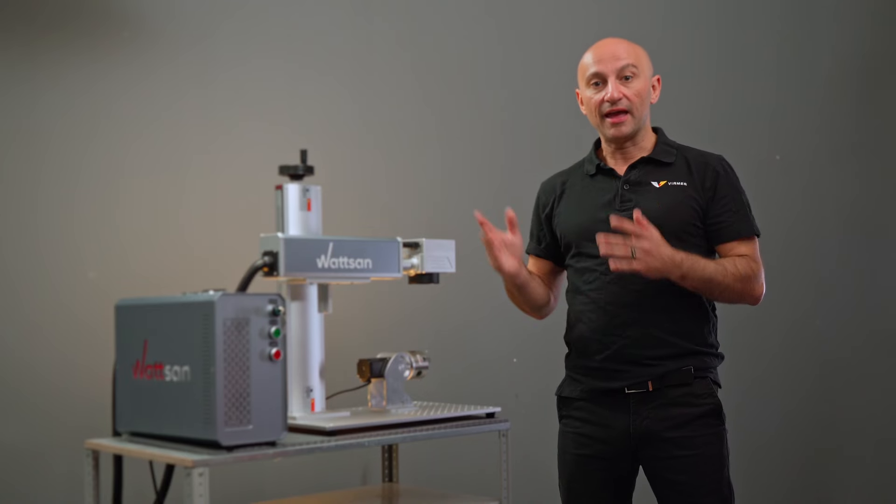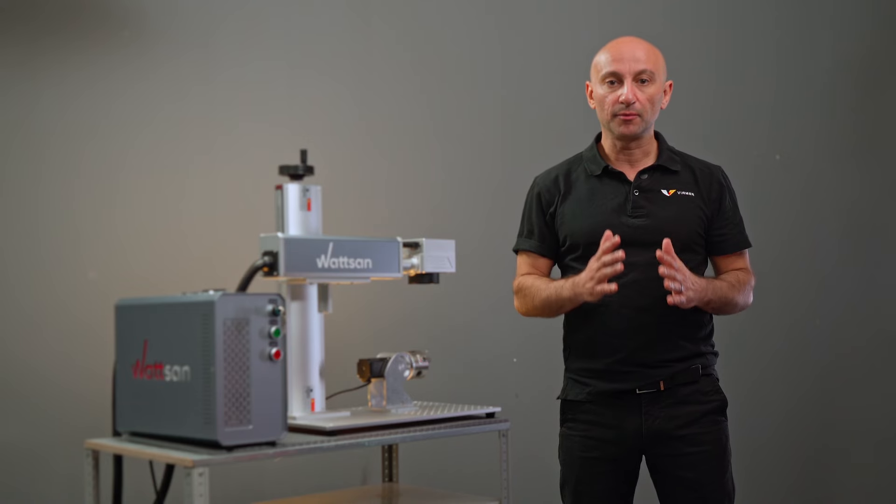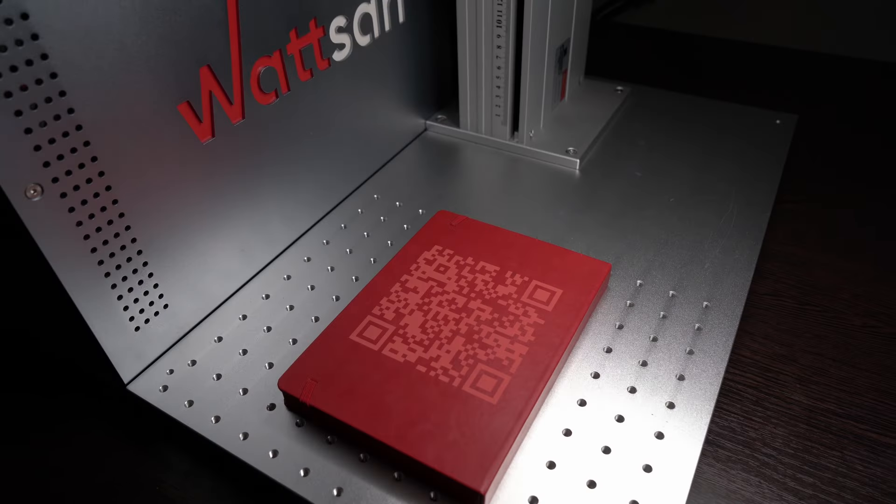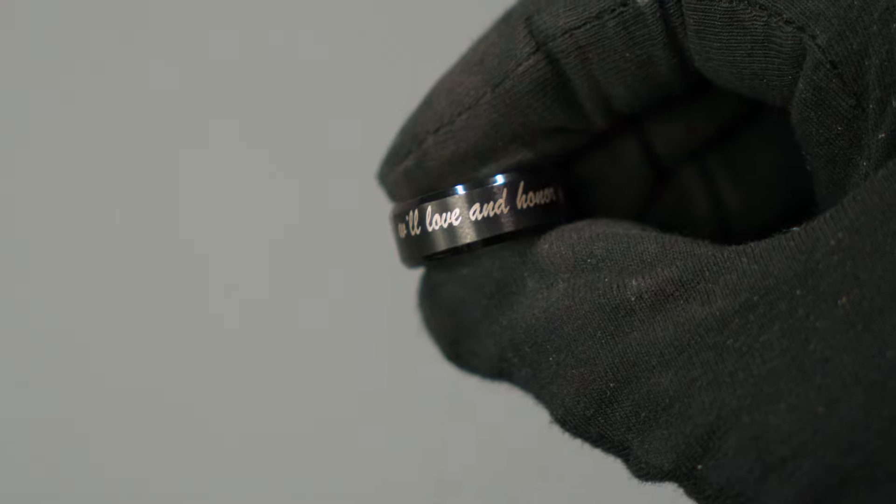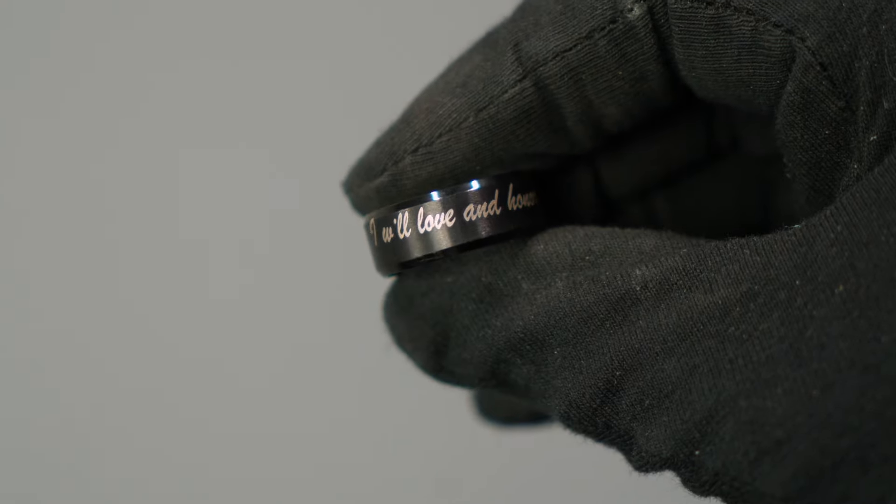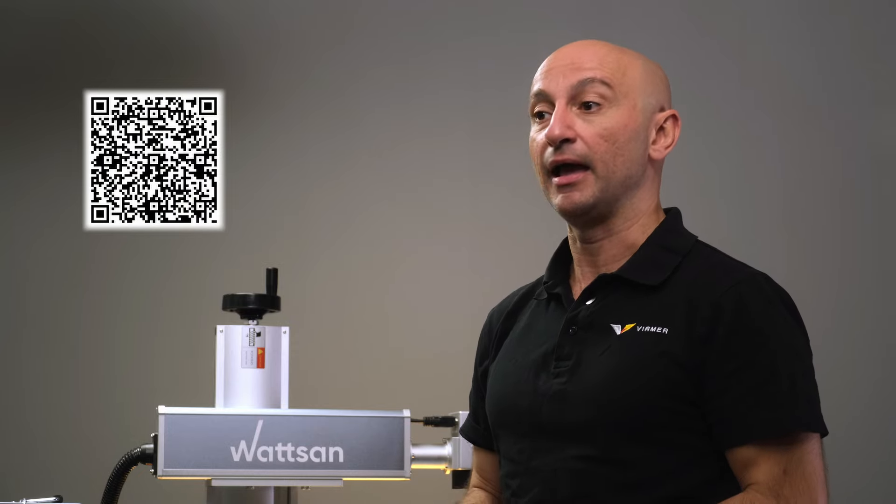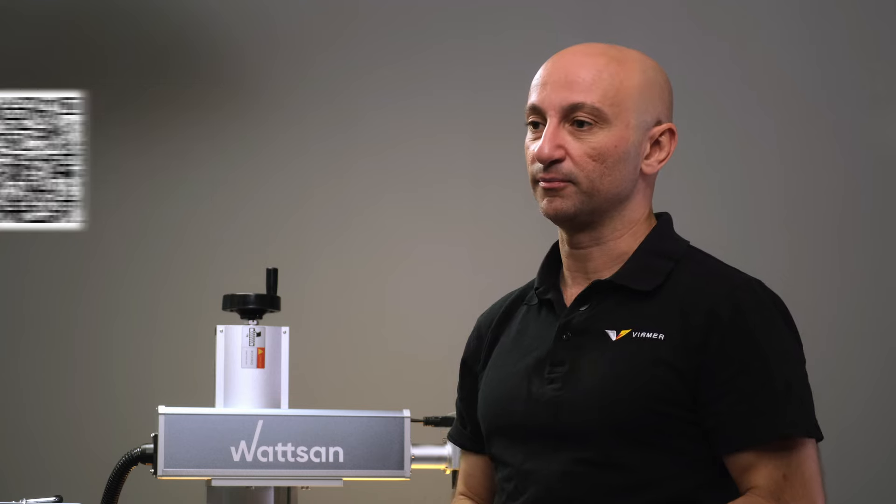The Wattsan FLTT marker is a desktop fiber laser marking and engraving machine. It can create barcodes, QR codes, intricate images and, as you can see, engravings. You can find out more about this marker on our website and you will find the link in the description.